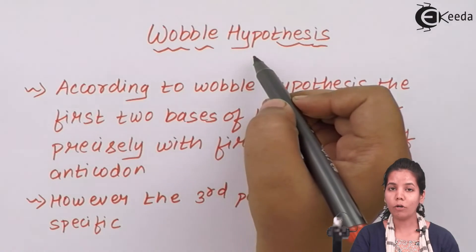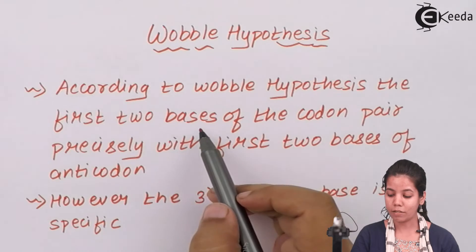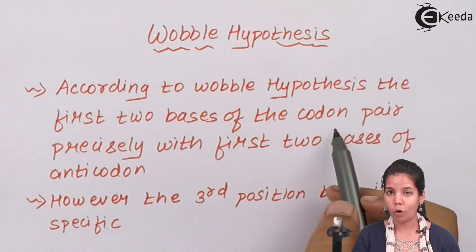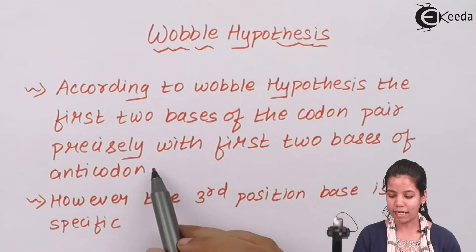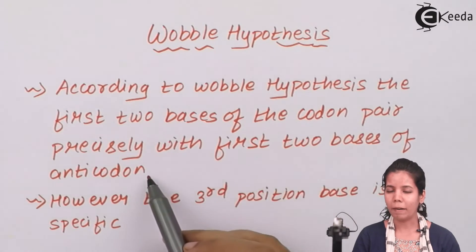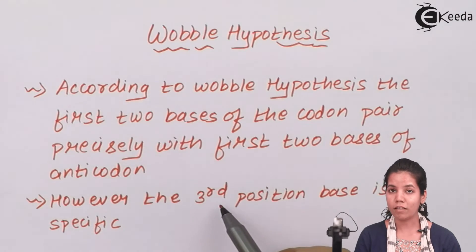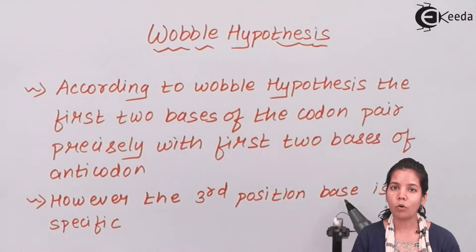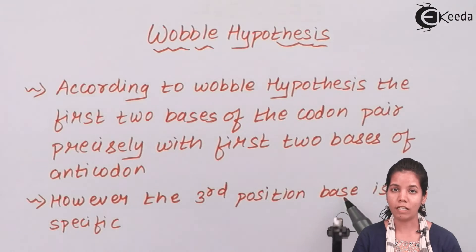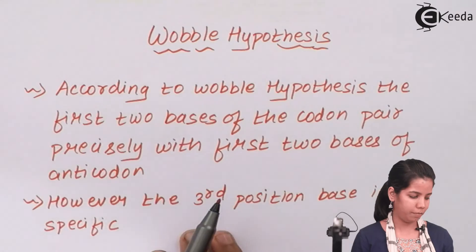According to Wobble Hypothesis, if the first two bases of a codon on mRNA pair precisely with the first two bases of the anticodon, but in certain cases the third position base of the codon does not match or is not synonymous to the third position of the anticodon, then it is a wobble position.